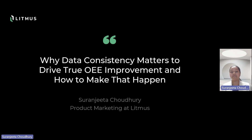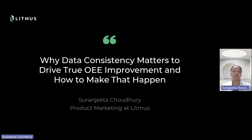OEE is a valuable metric for measuring manufacturing productivity, but it is not always perfect — or is it? It's a simple formula, but the numbers can be misleading depending on how you define uptime, throughput, and quality. For example, should you count rework as downtime or quality? Should you count planned downtime as downtime? Would you count setup time as downtime?